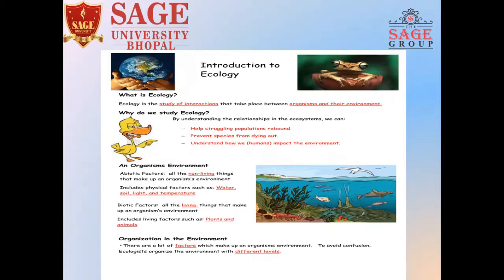Now, if we consider an organism's environment, there are two factors. Abiotic factors — all the non-living factors that make up an organism's environment — and biotic factors — all the living things that make up an organism's environment. So, two factors: abiotic factors and biotic factors.